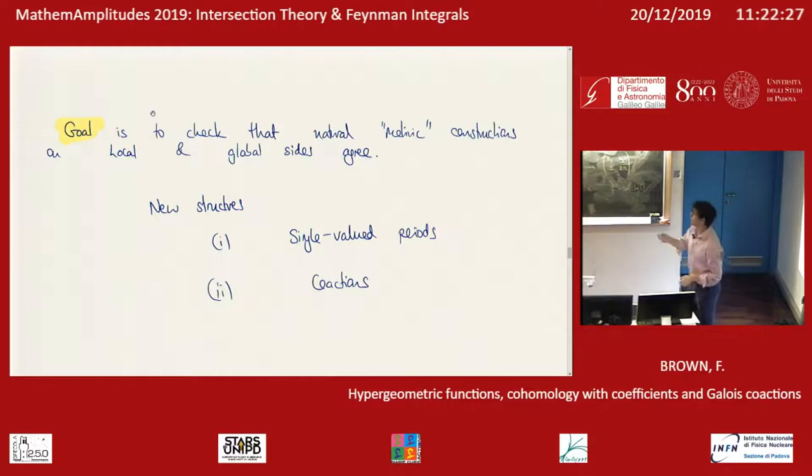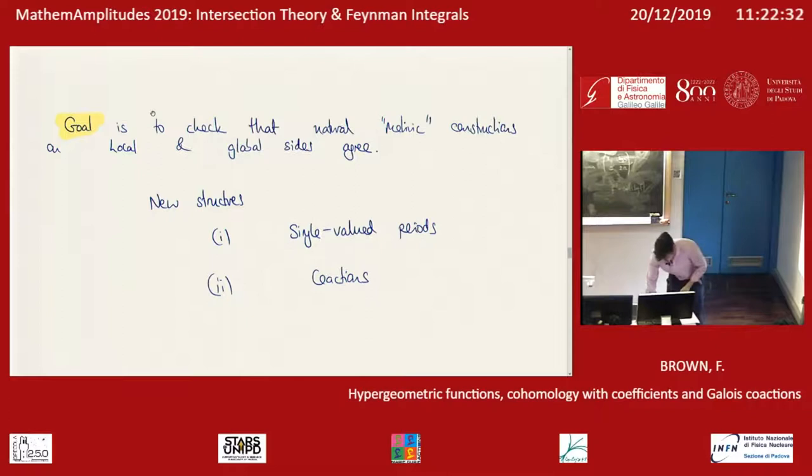So a period of a cohomology of a rank-1 system is actually an infinite sequence of periods on a completely different set of algebraic varieties. The goal of this whole theme is to check that certain natural constructions agree on the local and global sides. The local picture and the global picture are completely different mathematics. What we want to check is that constructions actually pass from one side to the other — which is completely not obvious because they are, as I've tried to explain, completely different geometrically. I'm going to emphasize two such constructions: single-valued periods and co-actions.